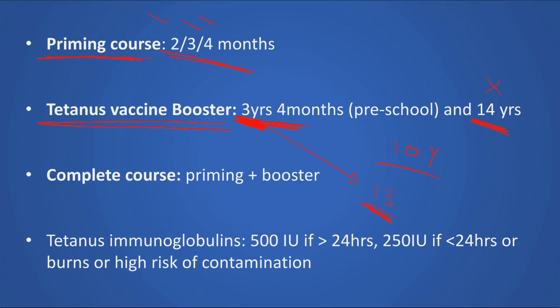Tetanus immunoglobulin is usually 250 units if given within less than 24 hours. If more than 24 hours have passed, or if there is very heavy contamination, you may give 500 units.